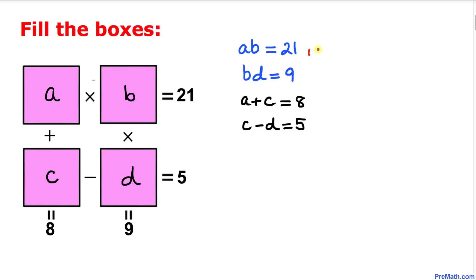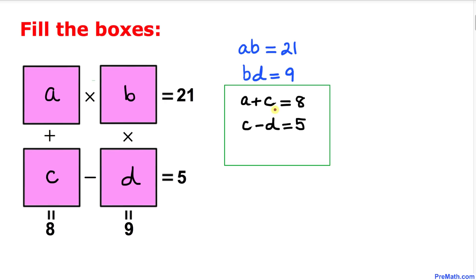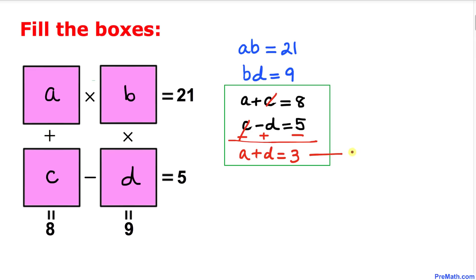We now have four equations and we are going to solve them. Let's focus on the two vertical equations and subtract the bottom one from the top. Changing the sign gives minus C plus D, and the C and minus C cancel, leaving A plus D equal to 8 minus 5, which is 3. Let's call this equation number one.